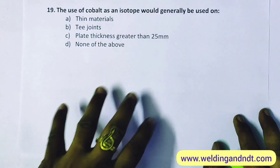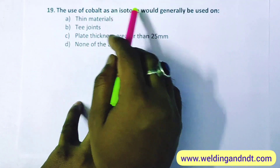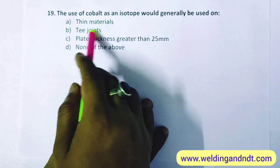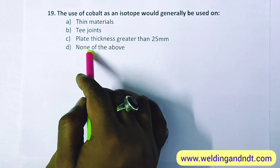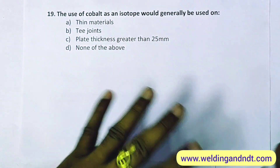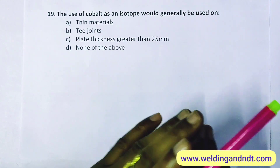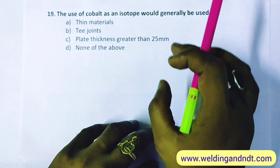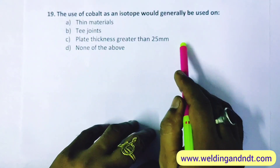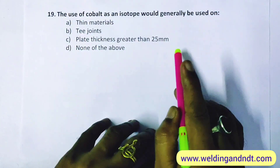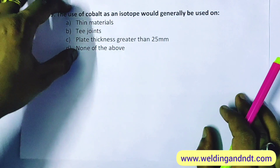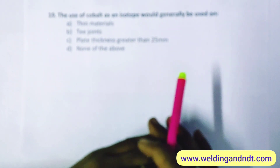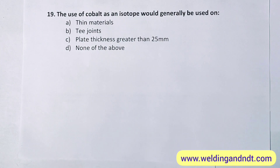Last question: the use of cobalt-60 isotope would generally be used on thin material, T-joint, plate thickness greater than 25 mm, or none of the above. I had clearly explained the use of cobalt-60 and when it can be used. I expect you will write your answer in the comment box. I will give the answer through the community tab of my channel. I hope you liked this video. Thank you very much.